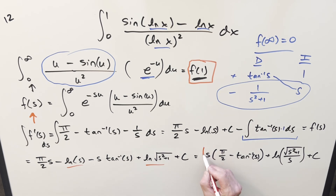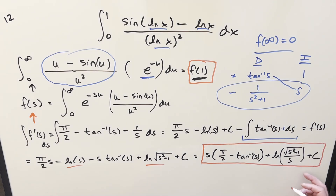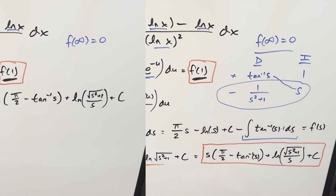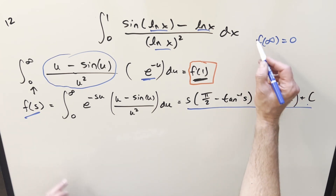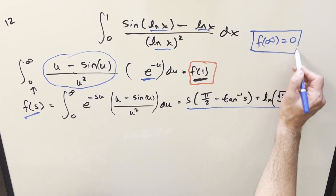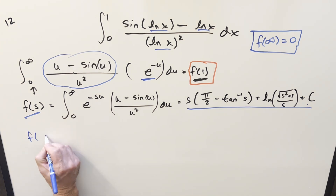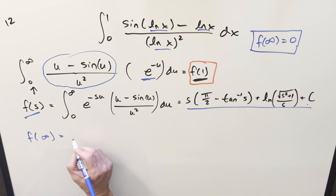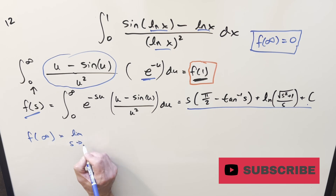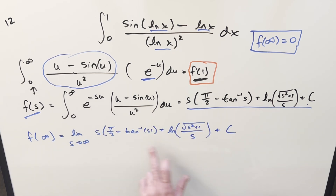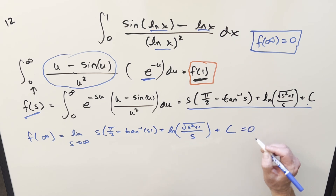We need to find the constant c using the boundary condition f(∞) = 0. Let's write this as a limit as s → ∞ of s·(π/2 - arctan s) + ln(√(s² + 1)/s) + c = 0. As s → ∞, the log term goes to ln(s/s) = ln(1) = 0, so that part vanishes. The tricky part is s·(π/2 - arctan s), since arctan(∞) = π/2 giving us ∞ · 0, an indeterminate form.